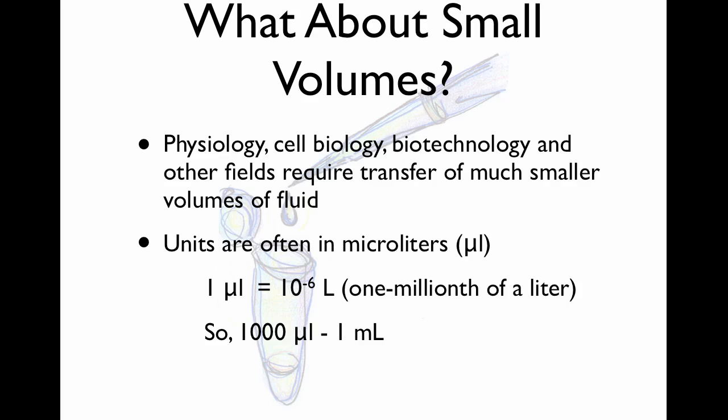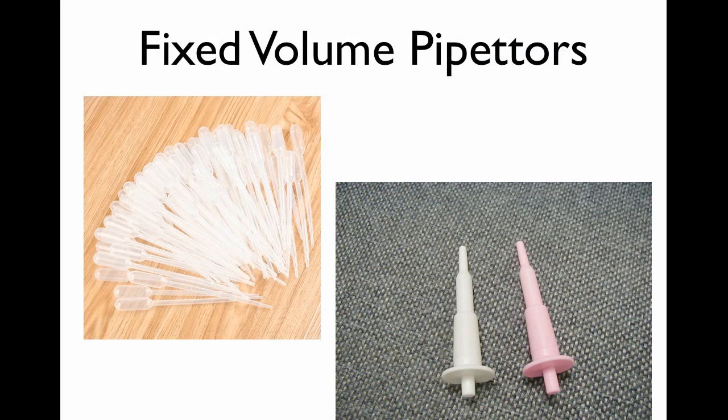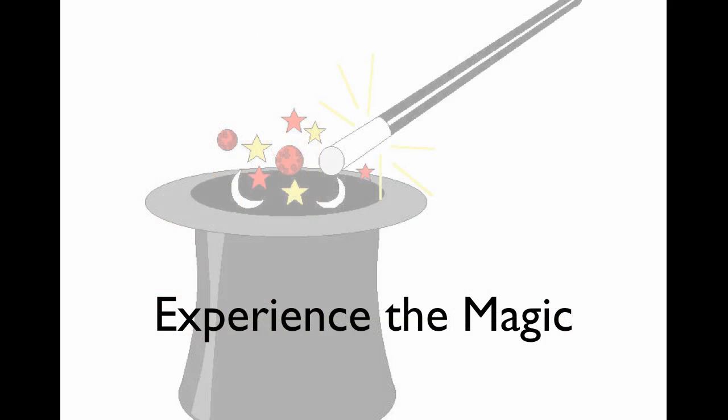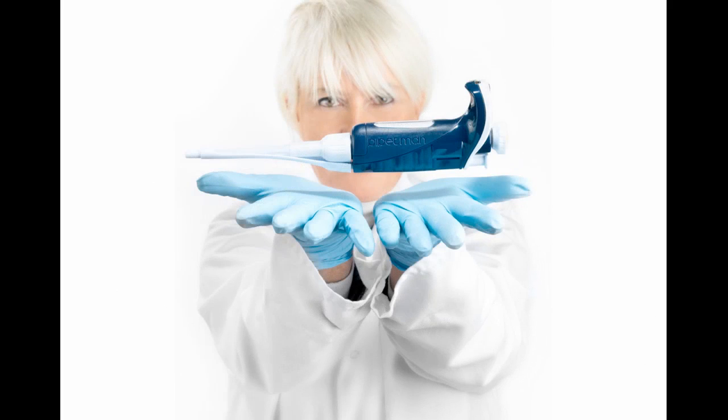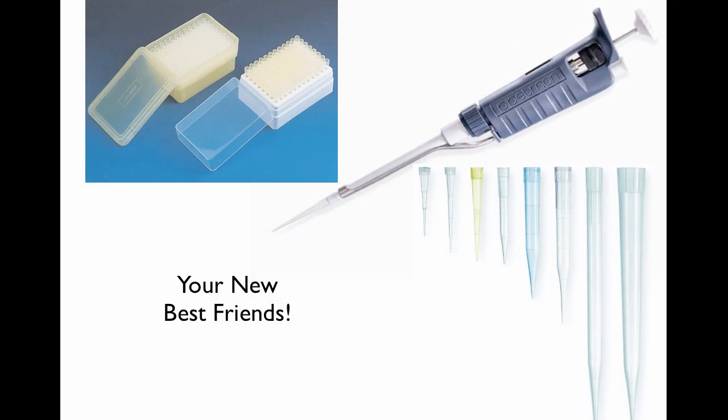What about really small volumes though? In physiology as well as a lot of other fields, we require very small volumes to be transferred with fairly high accuracy. The units that we use are often in microliters. And microliters are one millionth of a liter. So 1,000 microliters is equivalent to one milliliter. And what we're going to use for that, we have a variety of tools. We have fixed volume pipetters, and in most of your classes, you will use these at some time or another. But the magic is really the adjustable volume pipetters. And specifically one that looks something like this. These are your new best friends, the pipet men as it's sometimes called.